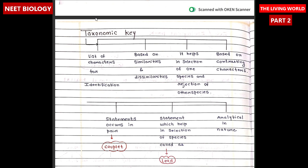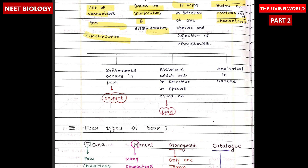Taxonomical key is a list of characters for identification, based on similarities and dissimilarities. It helps in the selection of one species and rejection of other species based on contrasting characters. Statements occur in pairs called couplets; statements used in the selection of species are called leads, and the key is analytical in nature.